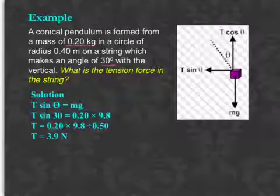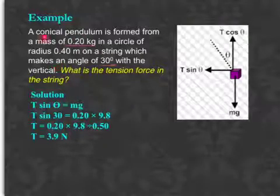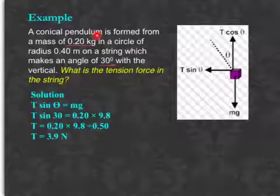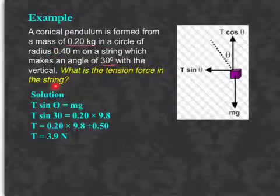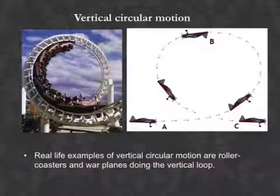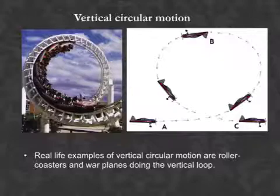Here is a worked example on conical pendulum. And you'll notice that you only need these two pieces of information. You don't need that. And you can work out the tension force in the string. So far, we've been looking at horizontal circular motion. Now we're looking at vertical circular motion.